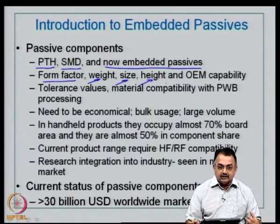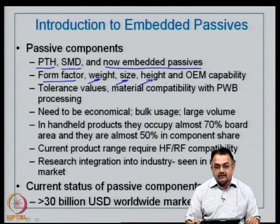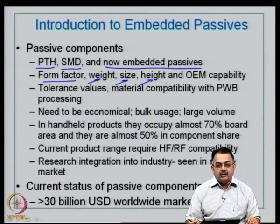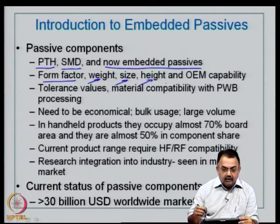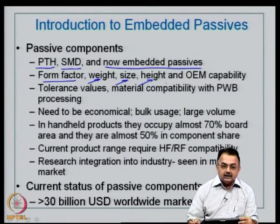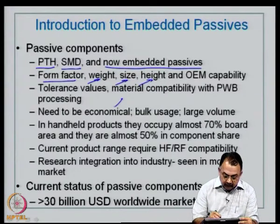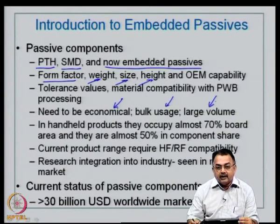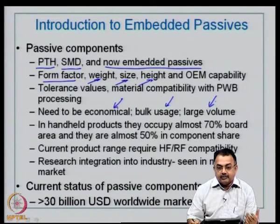As far as PWB fabrication is concerned, we must be very clear about what kind of passive component footprint we are using in the design, because through hole and SMD devices have different design considerations. In large scale manufacturing, we are going to use bulk volumes, so it needs to be very economical. New products and systems will use a large number of passive components, so they must be cheaper and cost effective so that manufacturers can consider using them in large volumes.